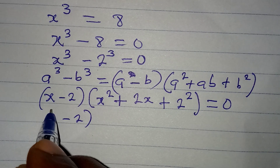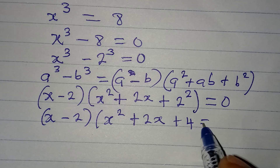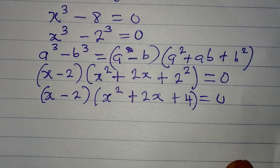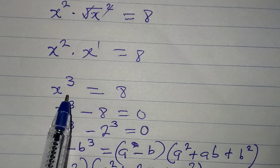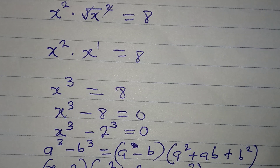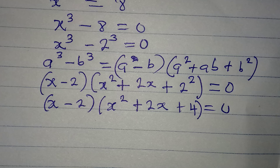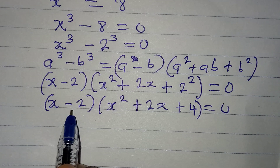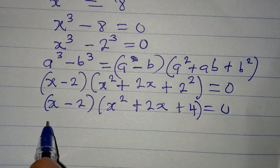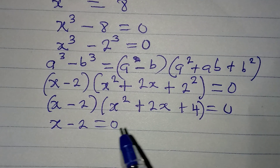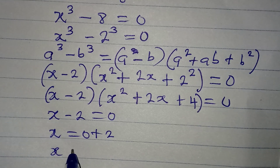Now we have x minus 2, times x squared plus 2x plus 4, equals 0. And now we apply the zero product rule. This is to the power of 3, meaning that you should have at least 3 solutions. From the first factor we're going to have 1 solution, and from the second we're going to have 2 solutions. Picking the first: x minus 2 equals 0, so x equals 0 plus 2, and then x equals 2.